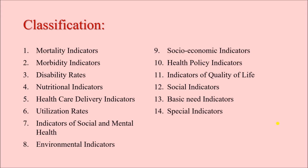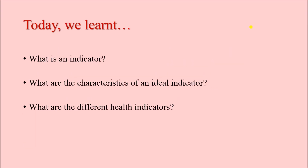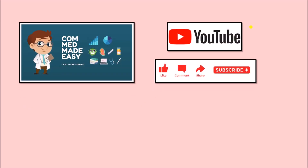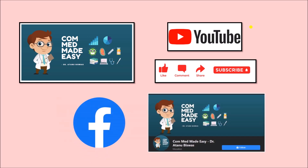From the next video, we shall be talking about the mortality indicators specifically — crude death rate, disease-specific death rate, proportional death rate, case fatality rate, and more — because these are asked frequently in short notes and viva. To summarize today's session: we have learned what an indicator is, what the characteristics of an ideal indicator are, and enumerated the different health indicators. If you liked the video, please subscribe, share with batchmates, juniors, and friends, and follow our Facebook page. Take care and see you in the next video.